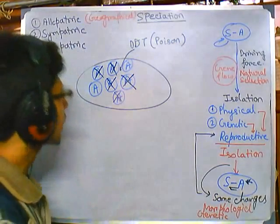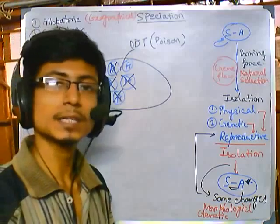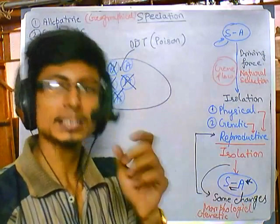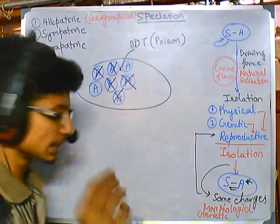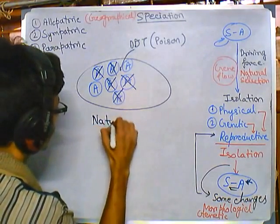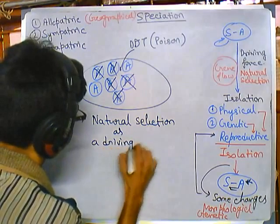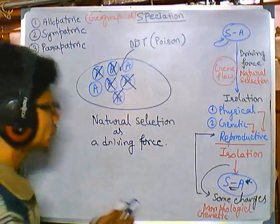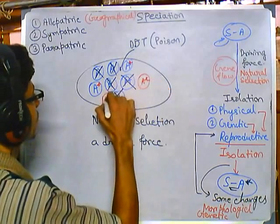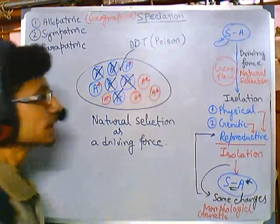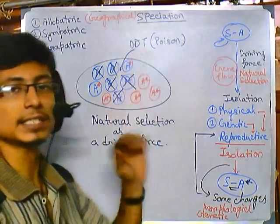However, in some cases, certain members which are resistant to DDT start to arise. We have discussed natural selection and antibiotic resistance — how resistance against certain chemicals can give rise to new traits. So due to natural selection as a driving force, some members of species A start to survive and start achieving important features that give them the advantage to withstand DDT.